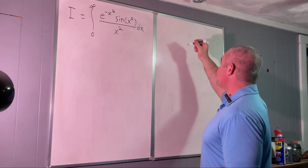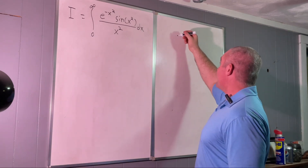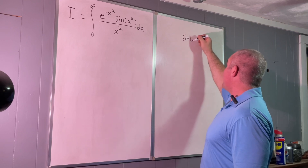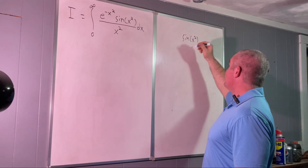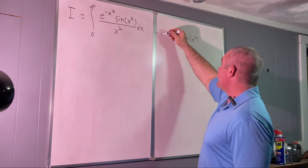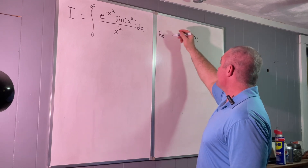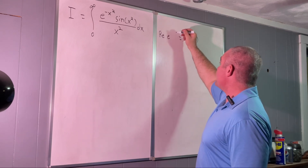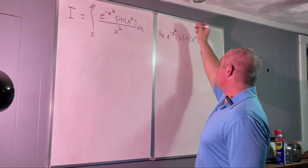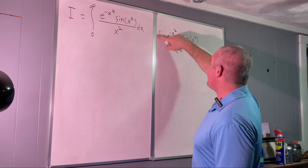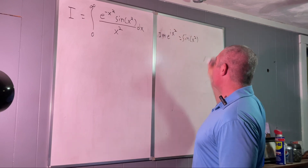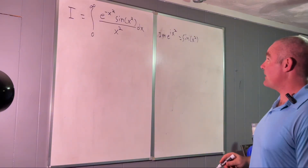The first thing we want to recognize is that sine of x squared is the imaginary part of e to the ix squared.